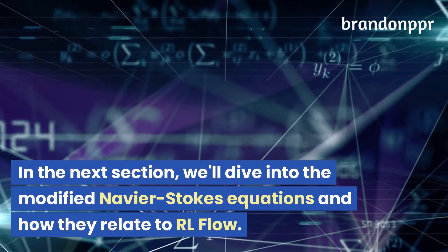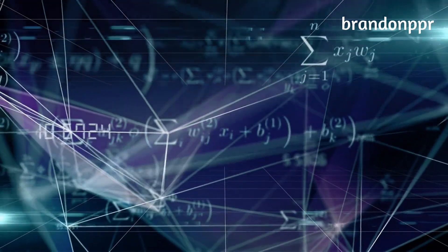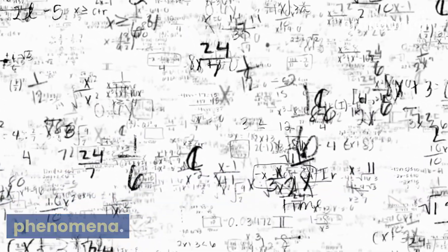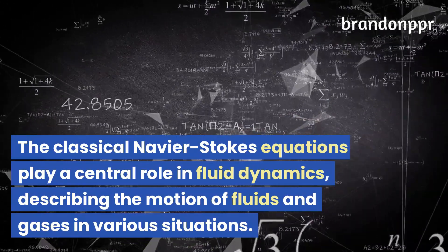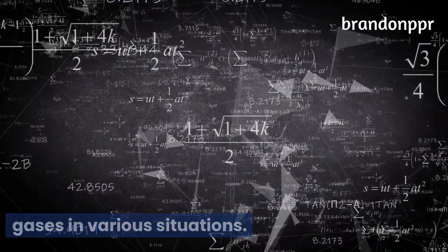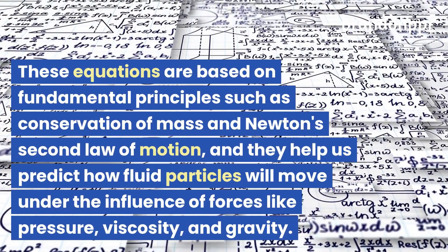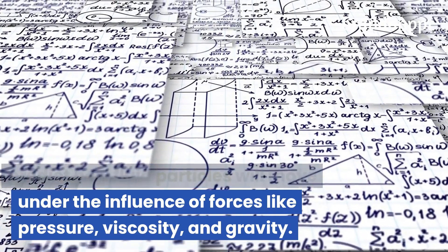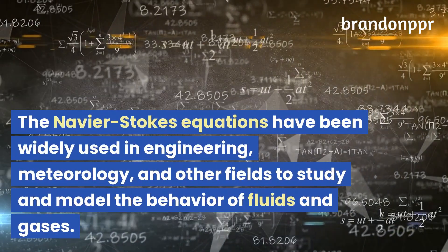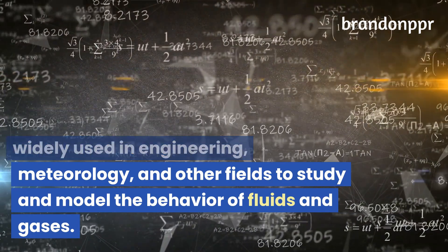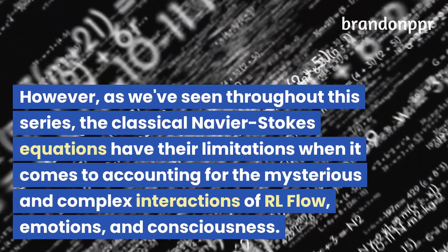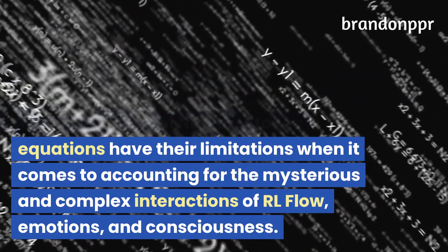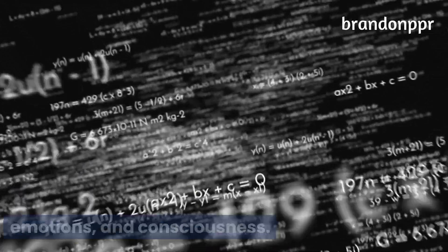Now let's dive into the modified Navier-Stokes equations and how they relate to RL flow. The classical Navier-Stokes equations play a central role in fluid dynamics, describing the motion of fluids and gases based on fundamental principles such as conservation of mass and Newton's second law of motion. They help us predict how fluid particles will move under the influence of forces like pressure, viscosity, and gravity, and have been widely used in engineering, meteorology, and other fields. However, the classical Navier-Stokes equations have limitations when it comes to accounting for the mysterious and complex interactions of RL flow, emotions, and consciousness.